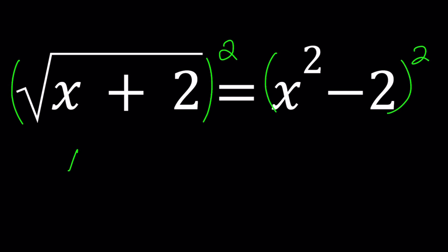So we're going to go ahead and start by squaring both sides because we have a radical. That's going to give us x plus 2 equals x to the 4th minus 4x squared plus 4. And then the next step should be bringing everything together and coming up with a quartic equation, right? x to the 4th minus 4x squared minus x plus 2 equals 0.